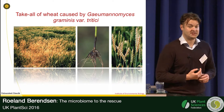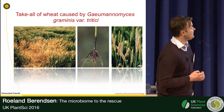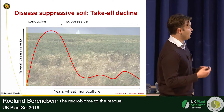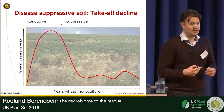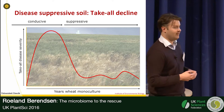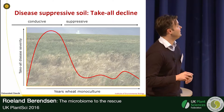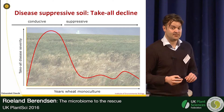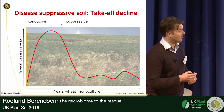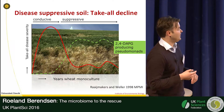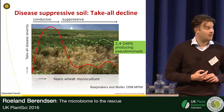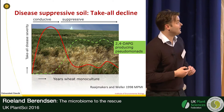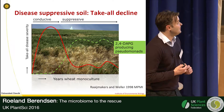Arguably the best studied examples are soils suppressive to take-all disease of wheat, caused by the fungus Gaeumannomyces graminis. This disease typically develops anywhere in the world when you start growing wheat: for the first couple of seasons the disease appears and quickly increases, which is logical because you have a virulent pathogen and a susceptible host. But after a certain number of years, following a very strong disease outbreak, the disease suddenly disappears.